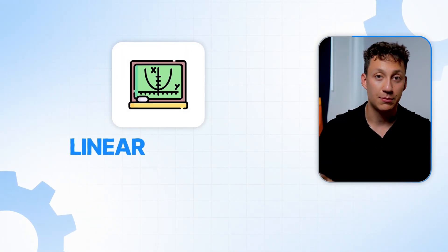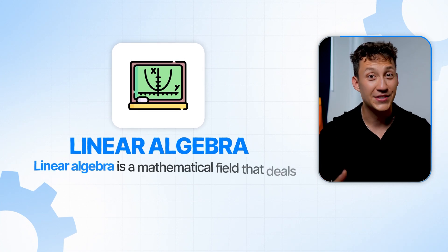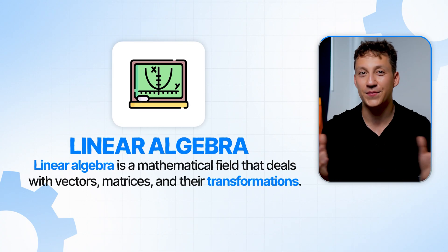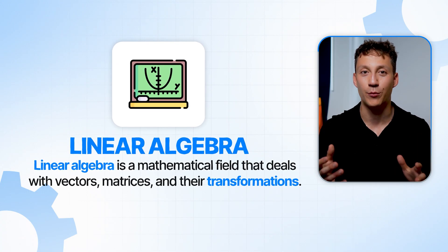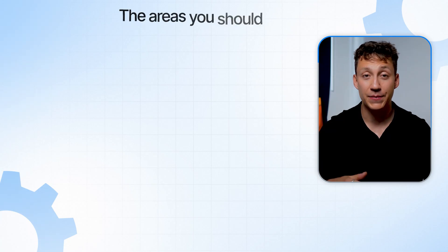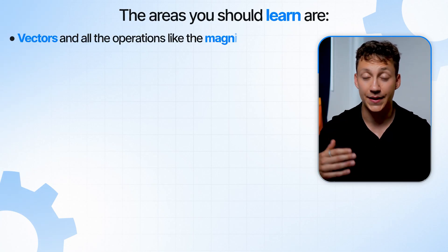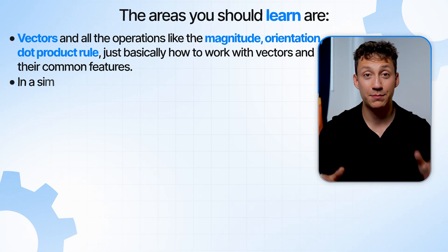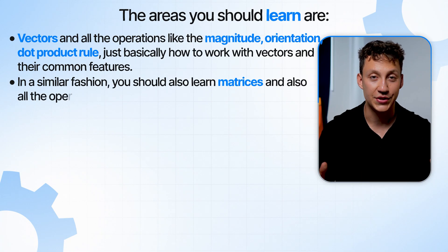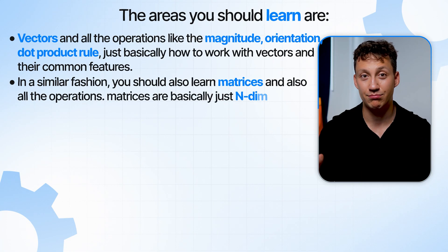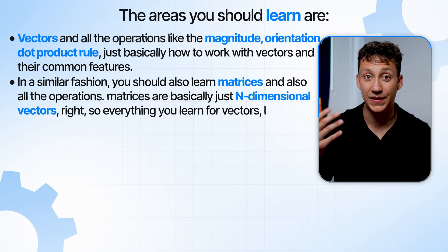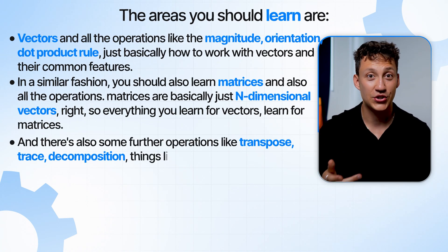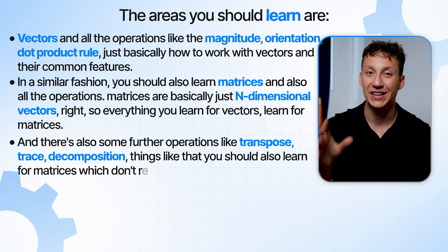After calculus, you want to learn some linear algebra. Linear algebra is all about vectors, sets, matrices and how they transform in linear spaces. The areas you should learn are vectors and all their operations — magnitude, orientation, dot product — basically how to work with vectors and their common features. In a similar fashion, you should also learn matrices and all their operations. Matrices are essentially n-dimensional vectors, but with further operations like transpose, trace, and decomposition.